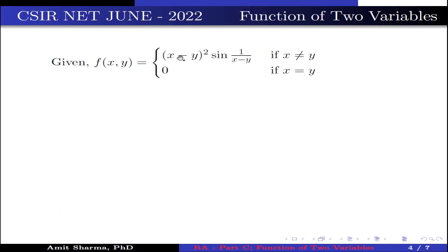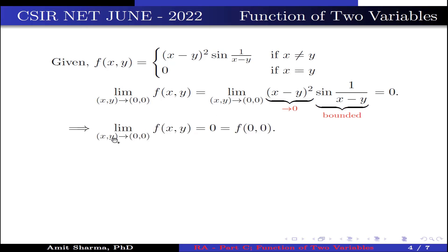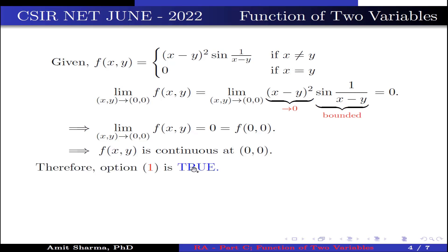The given function is f(x,y) = (x−y)²·sin(1/(x−y)) if x ≠ y, and 0 if x = y. The limit as (x,y) → (0,0) of f(x,y) equals the limit of (x−y)²·sin(1/(x−y)). Since (x−y)² approaches 0 and sin is bounded, this limit is 0, which equals f(0,0). Therefore f is continuous at (0,0), and option 1 is true.